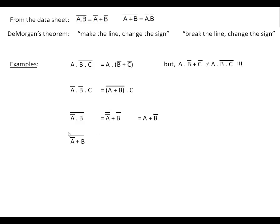And the same with this one here. We're going to break the bar and change the sign. We've got two bars over the A and only over the A, so those two bars will just cancel out.